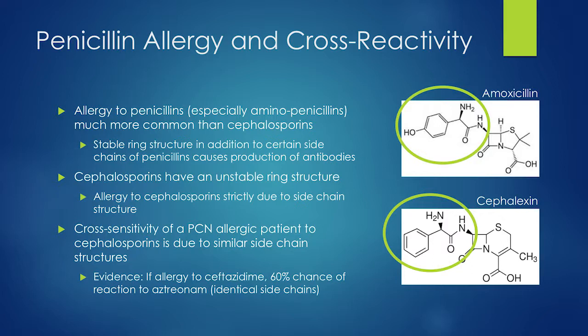Looking at amoxicillin versus cephalexin — a first-generation penicillin and first-generation cephalosporin — they have very similar side chain structures. Some new data from the past 5–10 years: the beta-lactam ring structure of penicillins is very stable and persists, so combined with the side chain, your body recognizes penicillin and produces antibodies. Cephalosporin allergies are much less common because this six-membered ring structure is very unstable — it breaks down quickly.